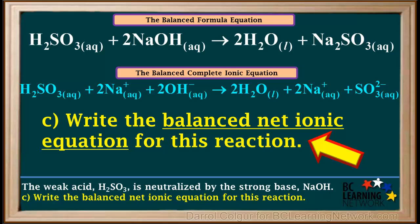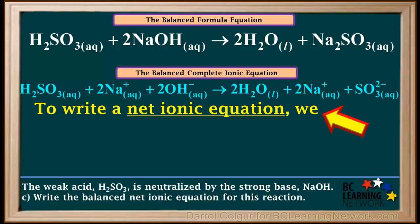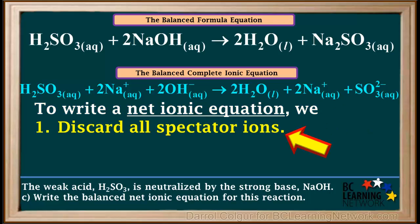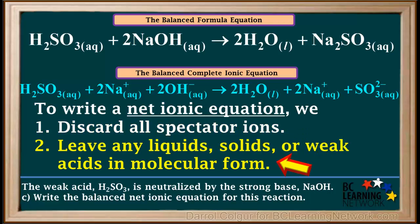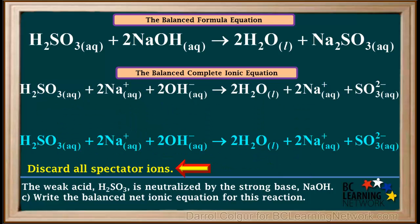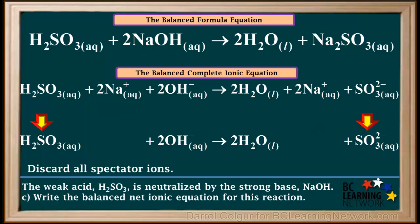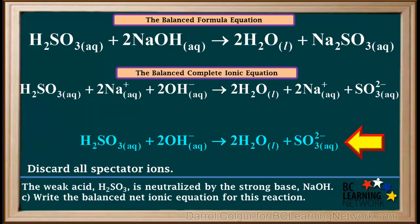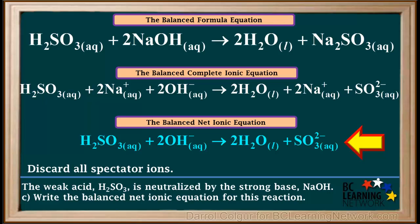Part C of this question is to write the balanced net ionic equation for this reaction. To write a net ionic equation for the reaction of a weak acid with a strong base, we discard all spectator ions and leave any liquids, solids, or weak acids in molecular form. The only spectator ion in this equation is the 2 Na+ ions on both sides, so we discard Na+ from both sides. This gives us the final balanced net ionic equation. This is different from the strong acid–strong base case because H2SO3, sulfurous acid, is a weak acid — we keep it in molecular form rather than dissociating it into 2 H+ and SO3 2−.